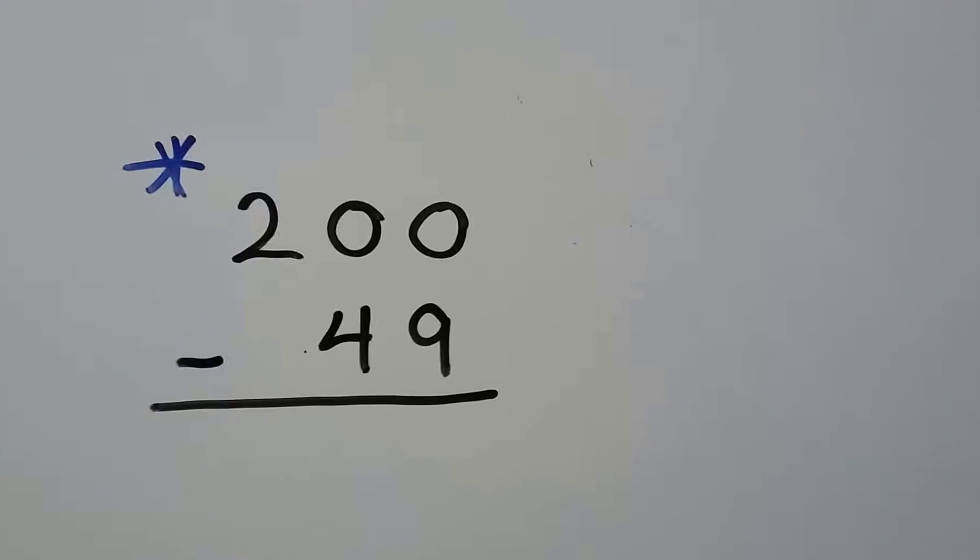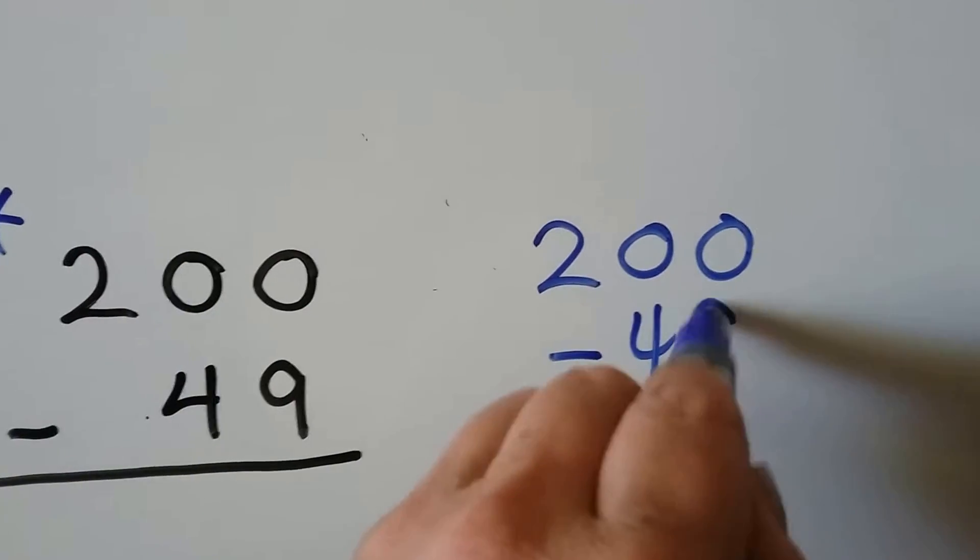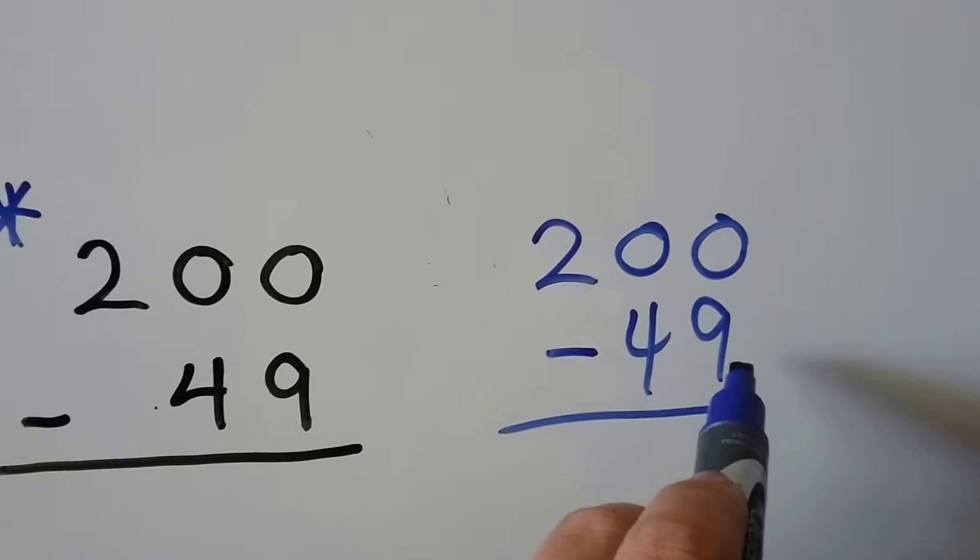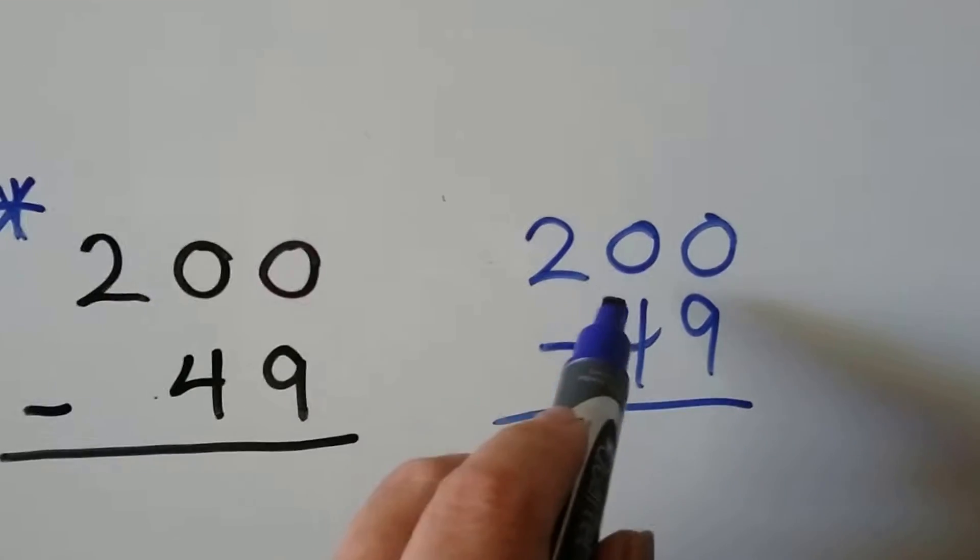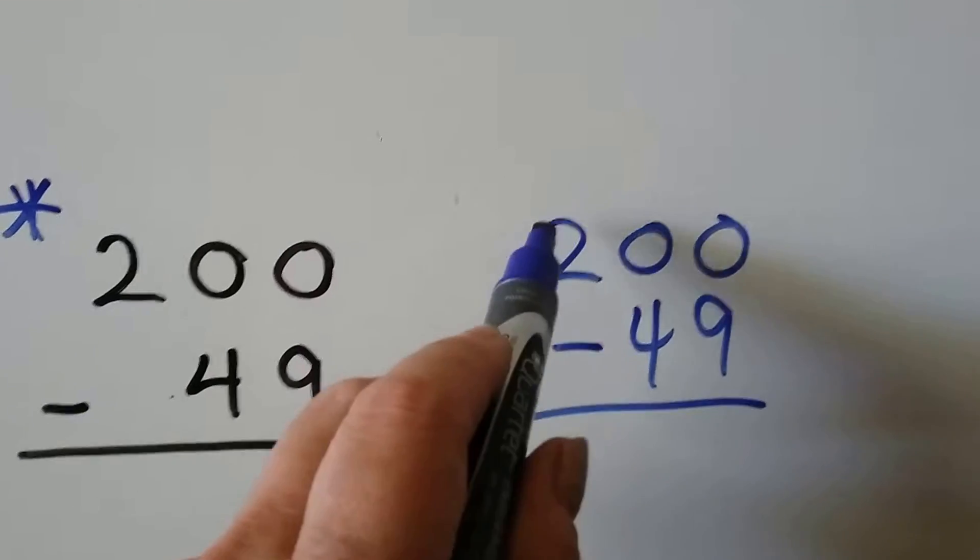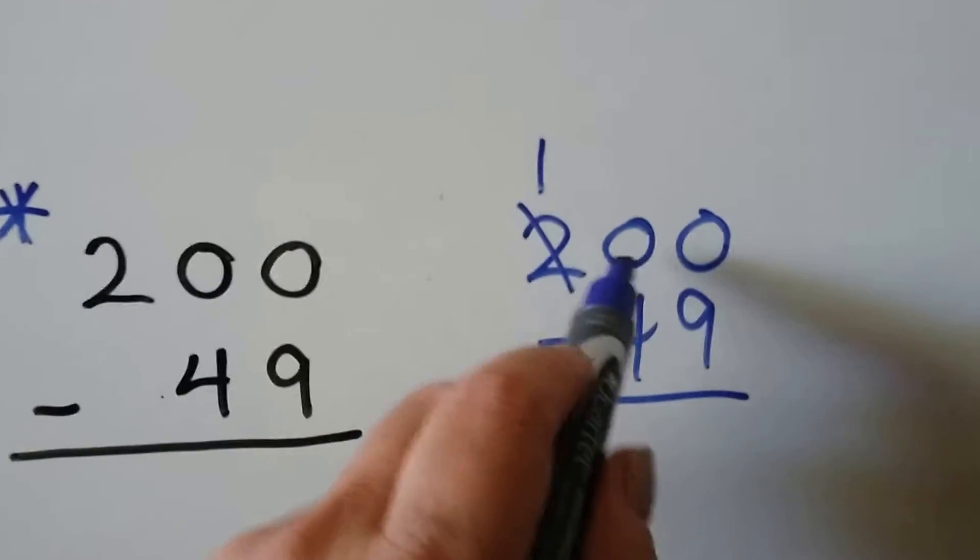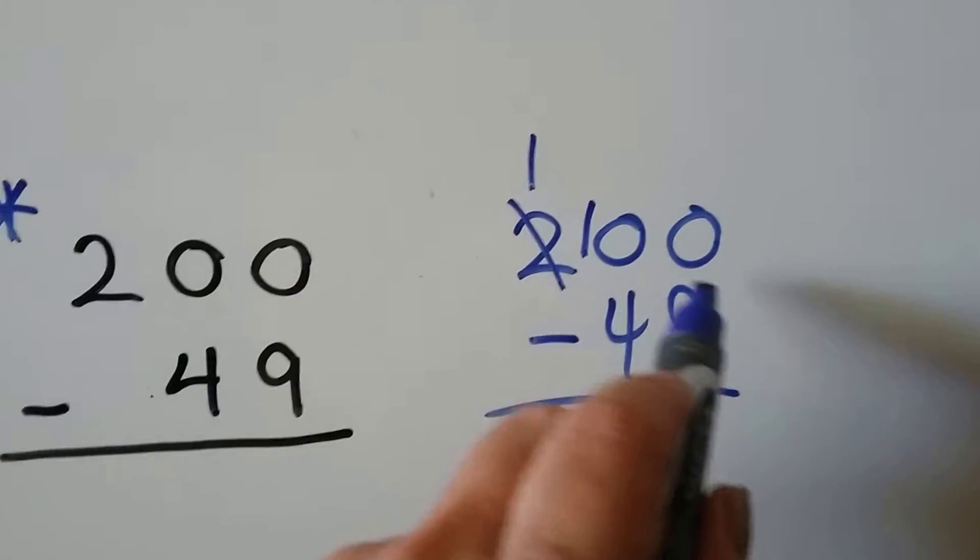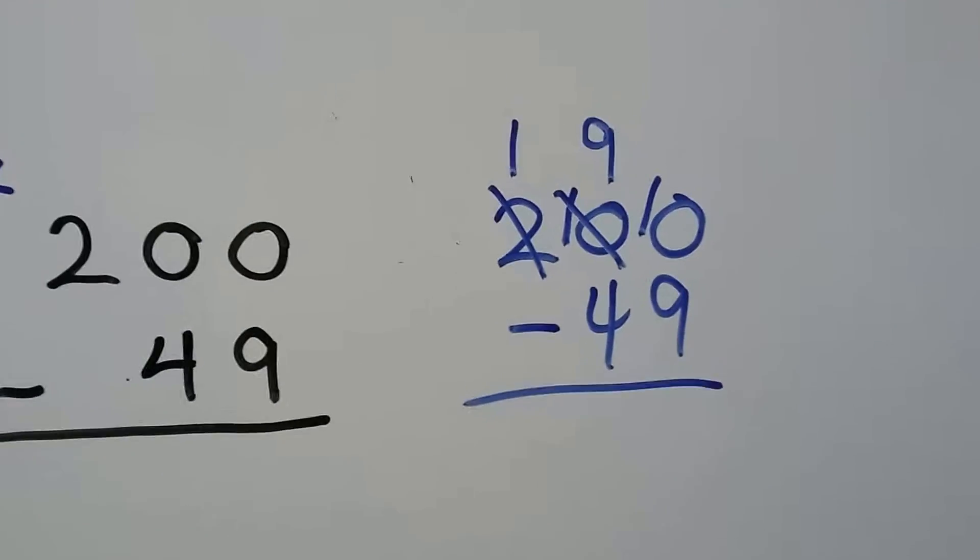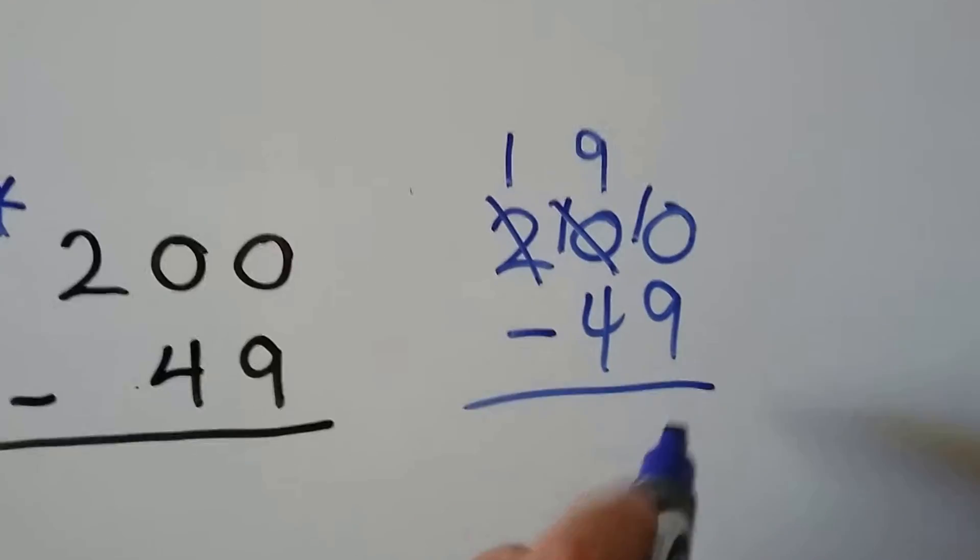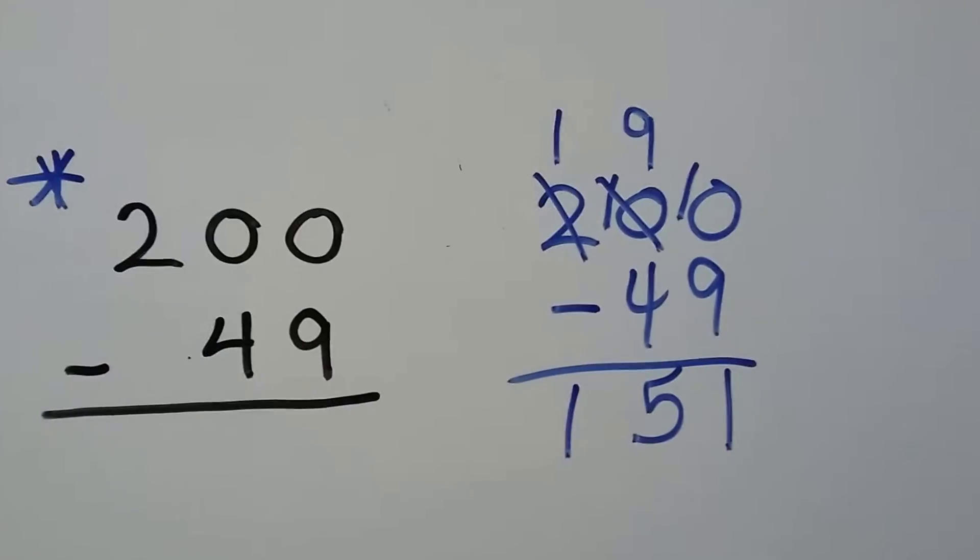I'll show you again. Now we have 200 minus 49. If we do it the old way, we say, oh, we have 0. We need to take 9 away. We can't. And we can't borrow it from the tens place because that's 0. So now we have to keep going to the next place value and go to the 2. And it becomes a 1. And now this 0 becomes a 10. Now the ones place can borrow from the 10. So that 10 becomes a 9 and now that becomes a 10. Now we have 10 take away 9. That's a 1. 9 take away 4. That's a 5. And we bring our 1 down. It's 151.